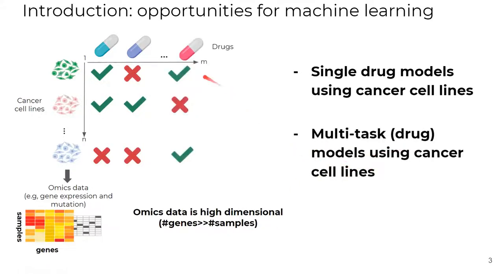To alleviate this problem, multitask learning is employed to virtually increase the sample size by training one single model that jointly predicts all drug responses at once, given cell line omics data. This approach has shown state-of-the-art results in previous benchmarking.